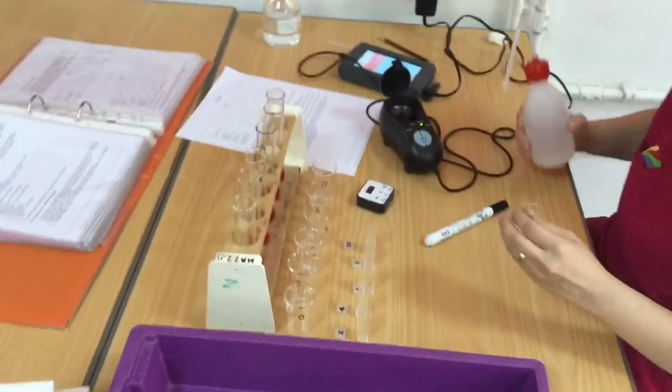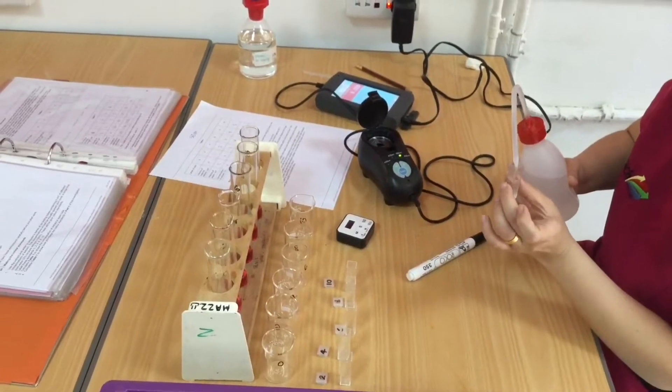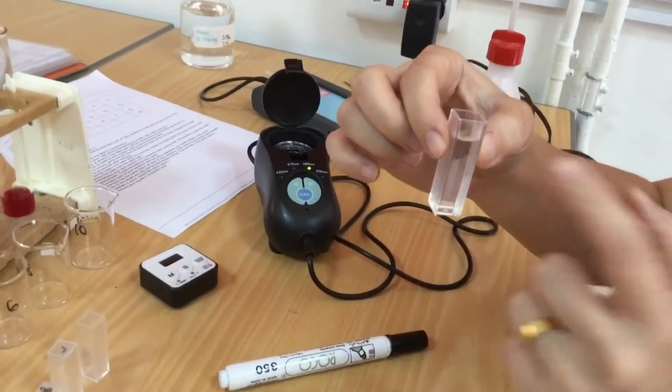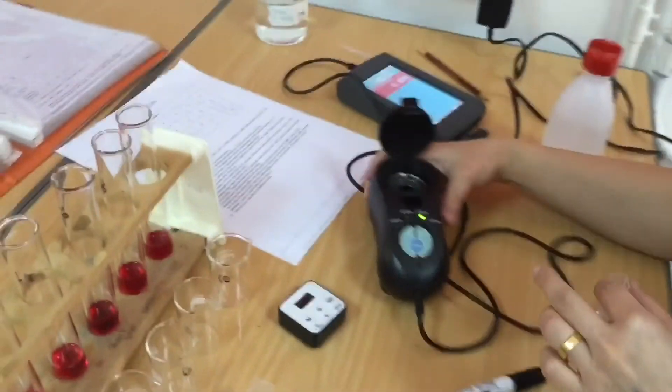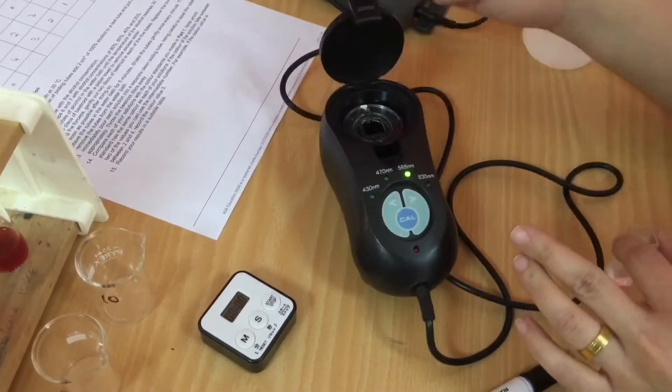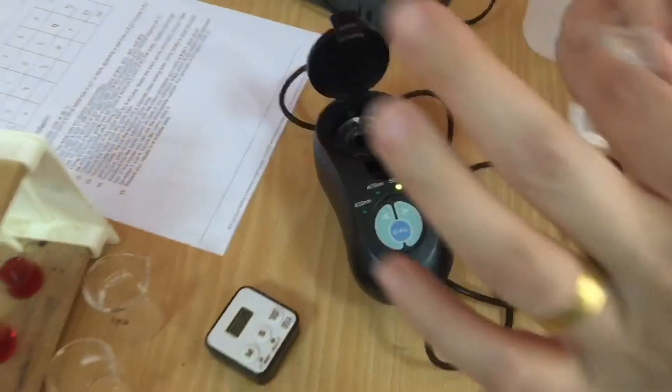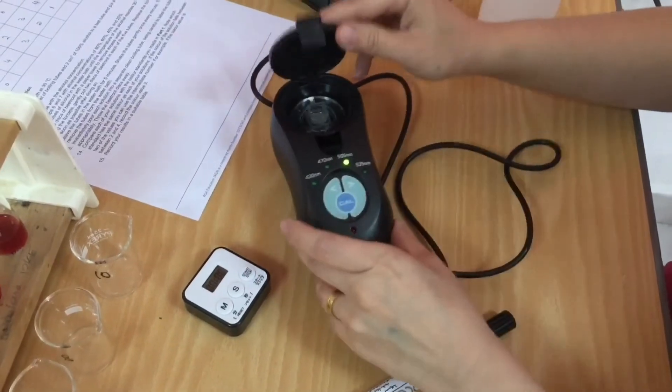The next thing to do is to calibrate the colorimeter. You can see now I'm pouring distilled water into the cuvette. The cuvette has got 2 smooth sides and 2 ribbed sides, and you're going to hold it on the ribbed side. You want to make sure that there's no fingerprints on the smooth side because that's going to change the absorbance. You can set the wavelength of light passing through it at 565 nanometres. The light shines through from the rear and you want it to go through the clear sides.